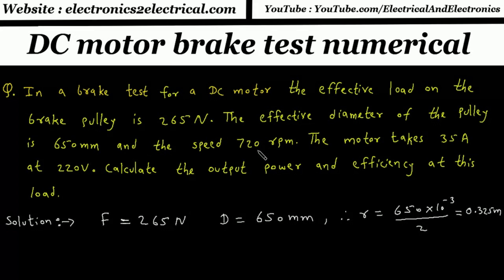And the speed is 720rpm, so N equals 720rpm. From this, we can find angular speed omega equals 2 pi N divided by 60.